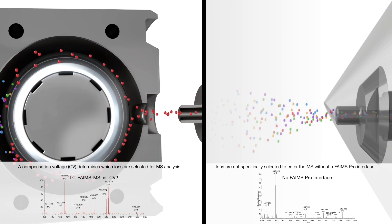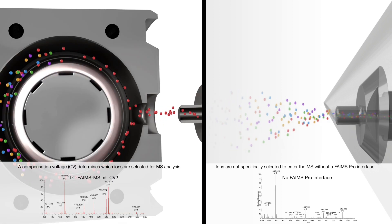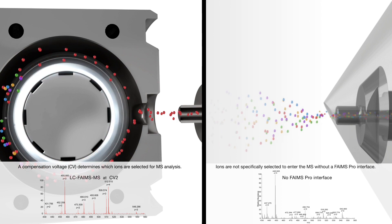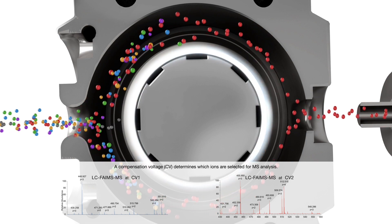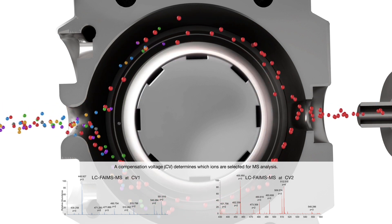The interface can also significantly increase dynamic range and signal to noise of those ions with stable trajectories. Changing the CV alters the ions having stable trajectories and therefore the mass spectrum obtained.